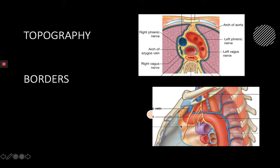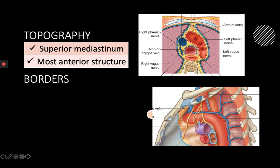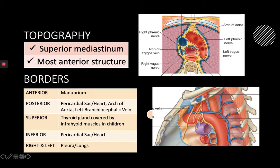In a child it can reach into the neck and lies in front and to the sides of the trachea, behind the sternohyoid and sternothyroid muscles. It can also reach up to the thyroid gland. In an adult it's just a small structure behind the sternum. The left and right borders of the thymus are the lungs from each side.